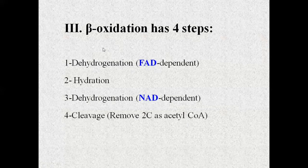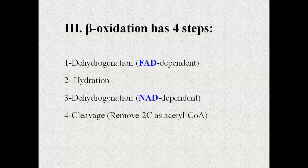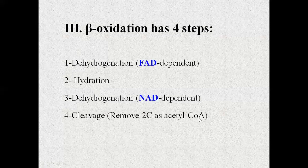In beta-oxidation, the fatty acid passes through four reactions. The first step is dehydrogenation: electrons or hydrogen are removed and taken up by electron carriers. As a result, FAD gets reduced to FADH2. The second step is hydration. The third step is another dehydrogenation where hydrogen is removed and taken up by NAD to form NADH. The fourth step is the cleavage step, where two carbons of the fatty acid are prepared for the formation of acetyl-CoA.